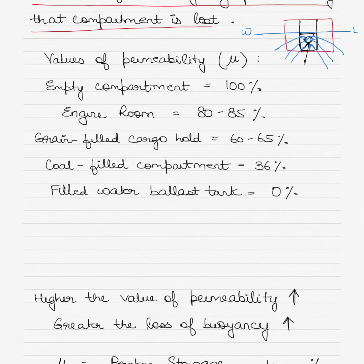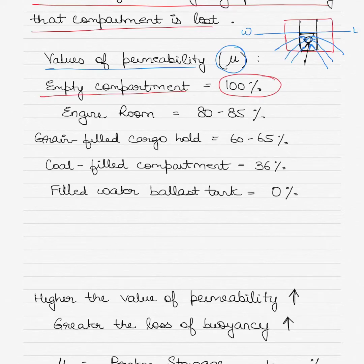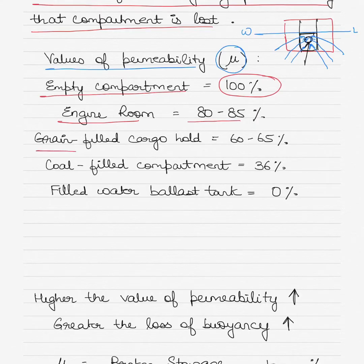Therefore, permeability — denoted by the symbol μ — for an empty compartment is 100%, because 100% of the compartment can get filled with water. In an engine room it is 80 to 85%, because the engine room has huge machinery, pistons, and engines, so the whole compartment is not empty. It is filled with equipment and machinery, so only 80 to 85% can be filled with water. A grain-filled cargo hold has about 60 to 65%, because water can seep in between the grain.